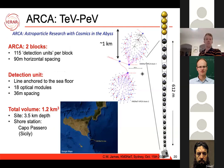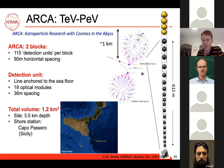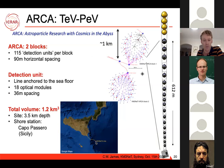ARCA is divided into two blocks, each consisting of 115 detection units or strings with about 90 metres horizontal spacing. Each detection unit is a line anchored to the seafloor with concrete, with a sensitive length of 612 metres and 36 metres spacing between optical modules, kept upright by buoyancy buoys at the top. Each optical module contains 31 photomultiplier tubes — a lot of PMTs. Total volume is about 1.2 cubic kilometres, similar to IceCube. The site is about 100 kilometres off Sicily at 3.5 km depth, with an electro-optical cable to a shore station at Capo Passero.